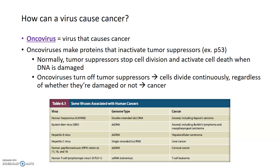Some typical oncoviruses associated with human cancers are shown in table 6.1. A couple you've probably heard of are herpes virus and HPV, or human papillomavirus, which is known to cause cervical cancer through the mechanism described above — inactivating tumor suppressors to allow uncontrolled cell division.